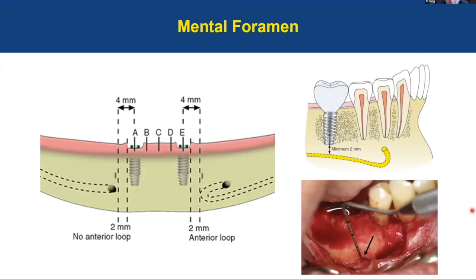Despite the usual CBCT accuracy, there is still some discrepancy between the CBCT and the clinical situation. Even with CBCT planning, we still need to make sure when we open the area and try to drill the implant bed that we open the flap, identify the position of the nerve, confirm it is as expected, and then measure exactly before drilling. Make sure you have 2 mm of distance between the implant and the canal or the mental foramen — and when there is a loop, it's 2 mm from the loop, not just from the canal.